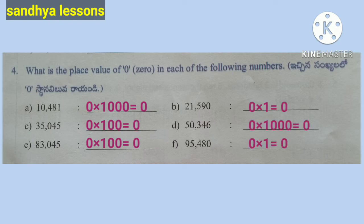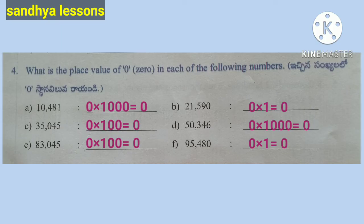Fourth: What is the place value of 0 in each of the following numbers? Place value of 0 in 10,481: 0 is in the thousands place, so 0 × 1,000 = 0. Place value of 0 in 21,590: 0 is in the ones place, so 0 × 1 = 0. Place value of 0 in 35,045: 0 is in the hundreds place, so 0 × 100 = 0. Place value of 0 in 50,346: 0 × 1,000 = 0. Place value of 0 in 83,045: 0 is in the hundreds place, so 0 × 100 = 0. Place value of 0 in 95,480: 0 is in the ones place, so 0 × 1 = 0.